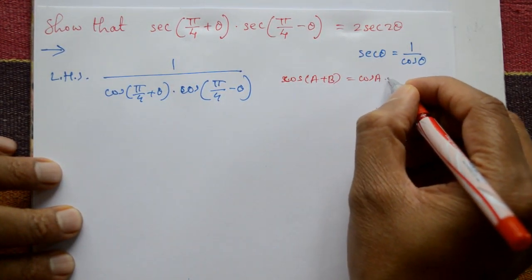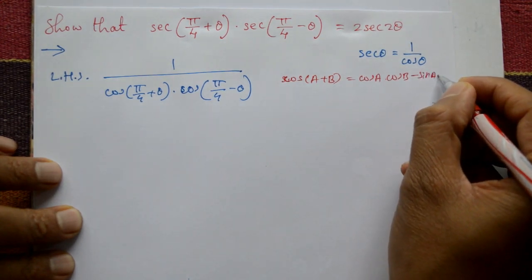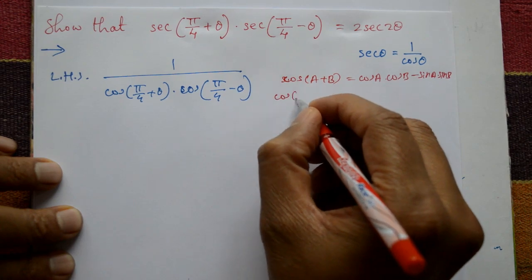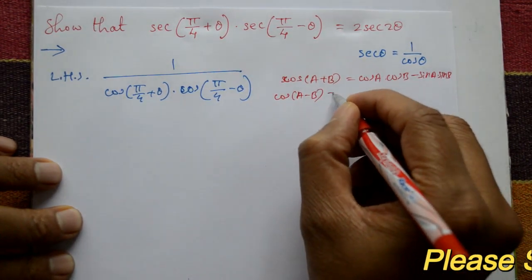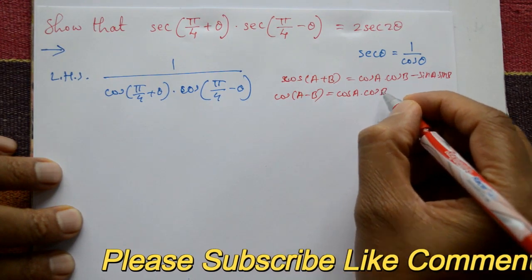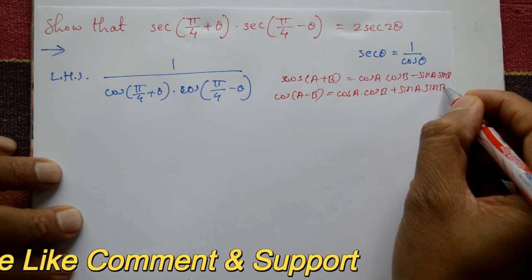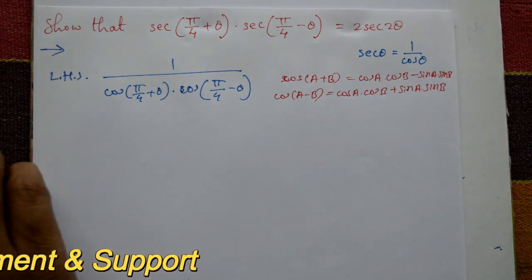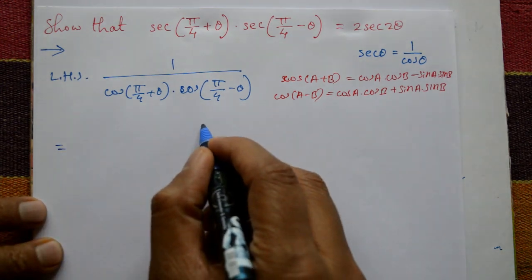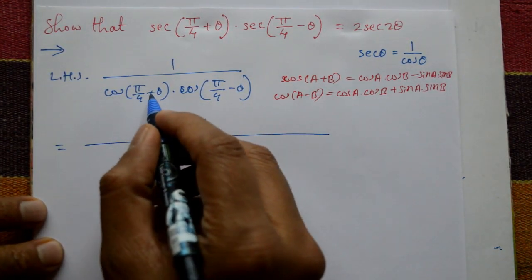And one more formula: cos(A − B) = cos A·cos B + sin A·sin B. Now, using these standard formulas, this is equal to 1 upon...